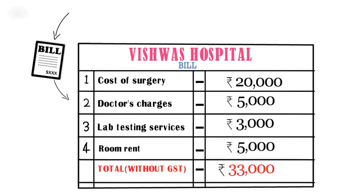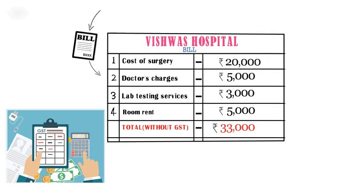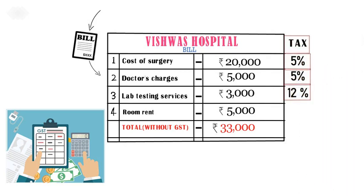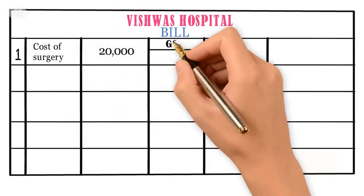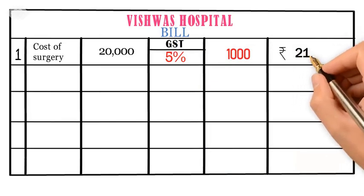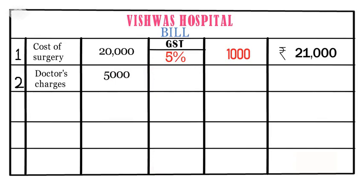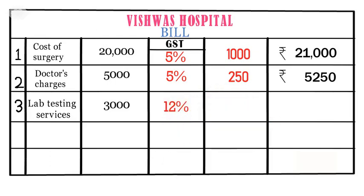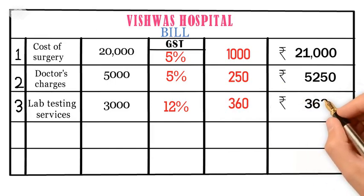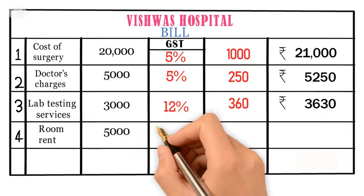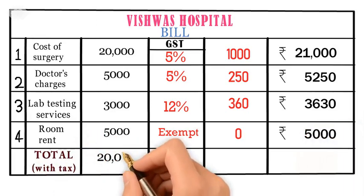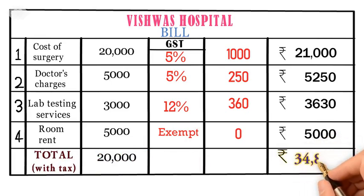Now in this bill, the hospital will charge GST on each component as per the rates specified. Cost of surgery rupees 20,000, GST at 5% is rupees 1,000, total rupees 21,000. Doctor's charges rupees 5,000, GST at 5% is rupees 250, total rupees 5,250. Lab services rupees 3,000, GST at 12% is rupees 360, total rupees 3,360. Room rent rupees 5,000, GST is exempt, so GST is zero. Thus, the total bill amount with GST comes to rupees 34,880.